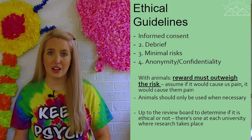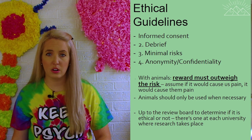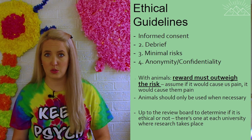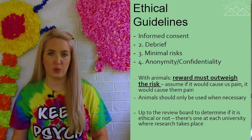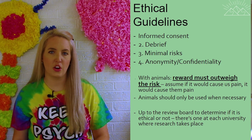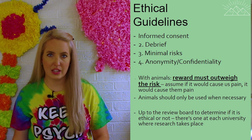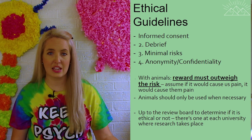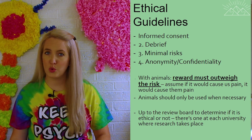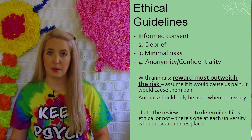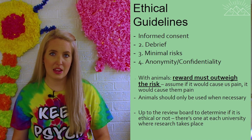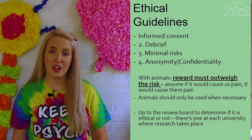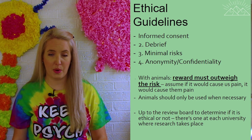The second guideline is to debrief subjects afterwards: once the experiment is done we tell them the purpose of the study, what the results were, and if there was any deception involved — where we had to keep information from them — we provide that at a later point so they know what was being studied. The third is making sure we minimize risks as much as possible — whatever we're learning must be worth whatever inherent risks exist. If the experiment won't teach us much and carries great personal risk, it's probably not one we should be doing. And finally, anonymity and confidentiality: if we publish our results, we use code names or fake names to protect the identity of all participants.